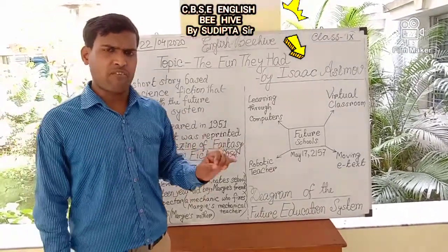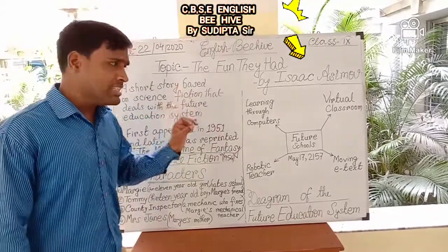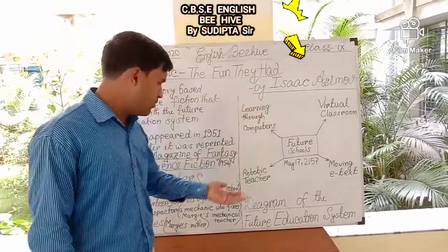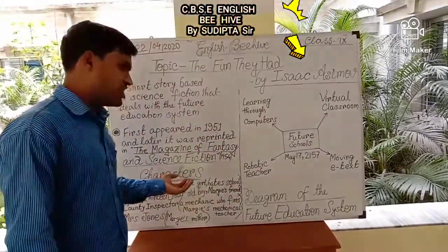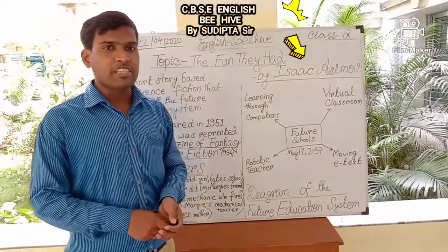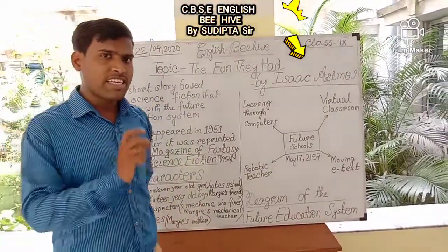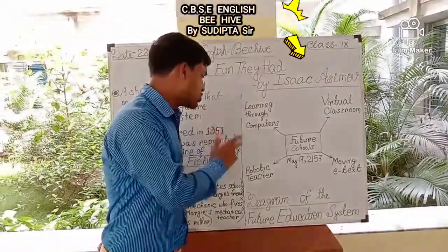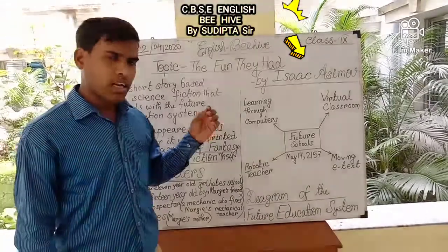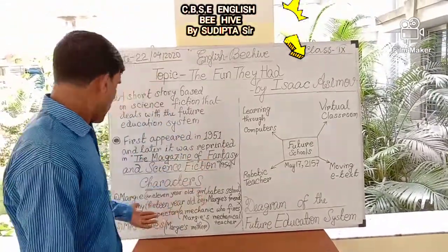Margie is fed up with school. In this virtual classroom, she has to submit her homework through a particular slot of the robotic teacher, which makes her feel even more disconnected.